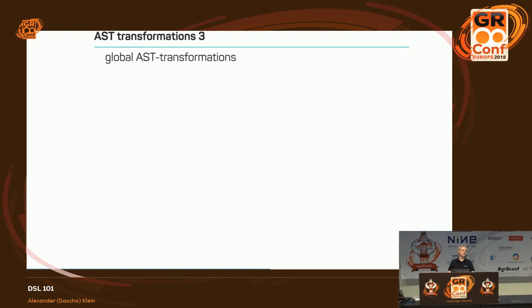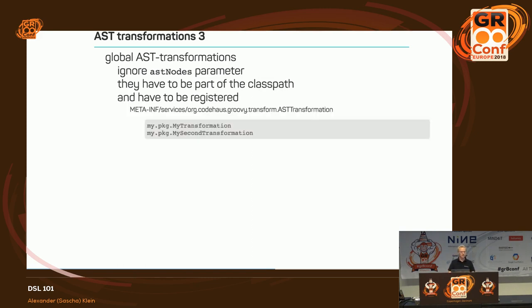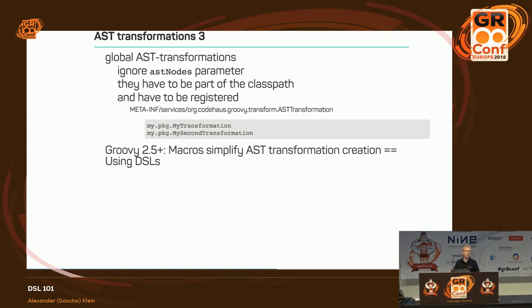For global AST transformations, they are very similar, but the ASTNodes parameter is null because there is no annotation or annotated node. They must be in the classpath and registered via a file named 'org.codehaus.groovy.transform.ASTTransformation' — just a list of classes to use as AST transformations. Once this is in the classpath, it's used for every compilation. From Groovy 2.5 onward, the macro feature greatly simplifies writing AST transformations.